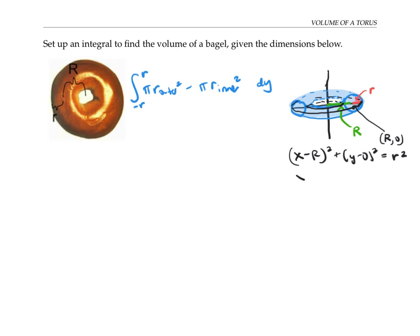I'm going to rewrite my equation as (x - R)² = r² - y². Take the square root of both sides. So now I need ±√(r² - y²), and then add R to both sides.